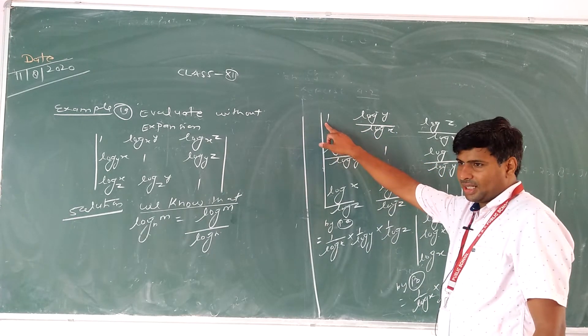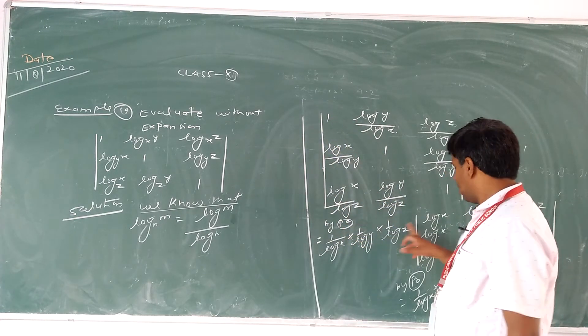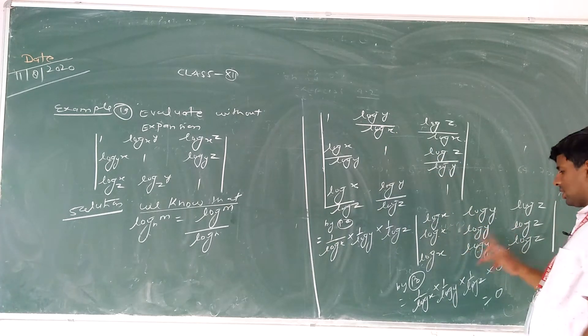Taking it out: 1 by log x multiplied by log x, log y, log z. We have log x, log y, log z repeating in each row.